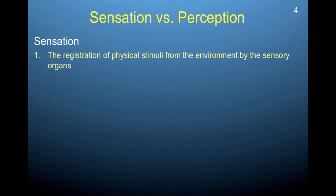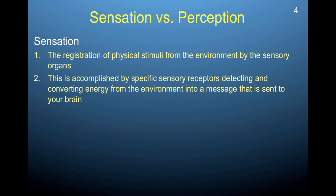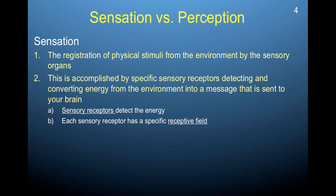Sensation is the registration of physical stimuli from the environment by the sensory organs. This is accomplished by specific sensory receptors that detect and convert energy from the environment into a message sent to your brain. These receptors basically act as encoders — they take information from the world and encode it for our brain to use. We have sensory-specific receptors that engage in very specific encoding: our eyes encode visual information, our ears auditory information, and so on. Each sensory receptor has a specific receptive field, and our senses are actually detecting energy — light waves, acoustic mechanical waves, and chemical energy for smell.